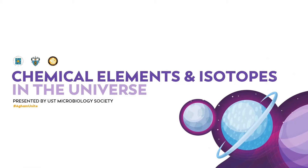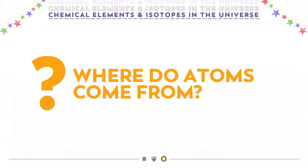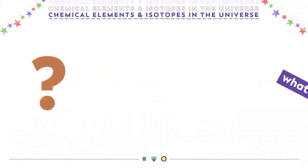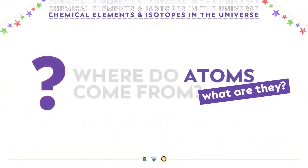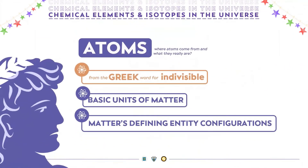Maybe some of us are wondering where atoms come from and what they really are. For us to easily understand atoms, these are the basic unit of matter and defining entity configurations. The name atom derives from the Greek word for indivisible, since atoms have been once believed to be the smallest entities in the universe and cannot be split or divided.